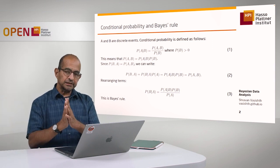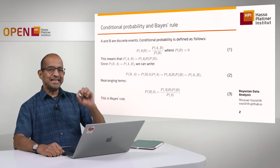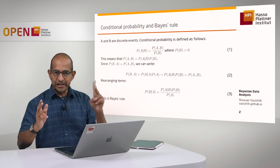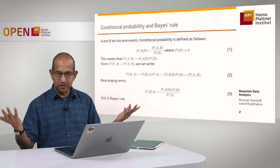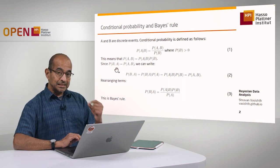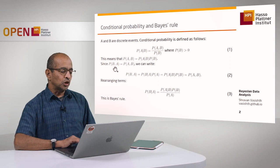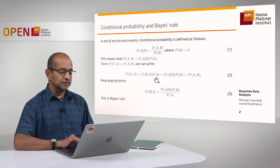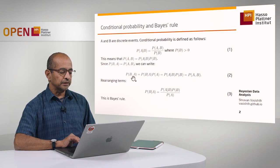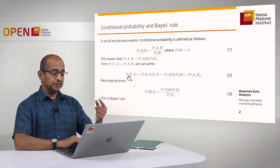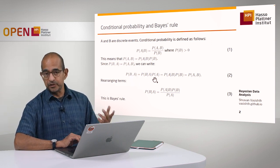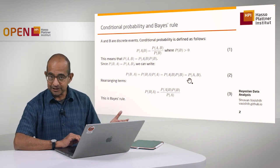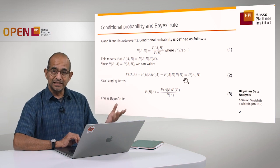Here's another cool thing: the probability of B and A is the same as the probability of A and B. The joint probabilities don't change depending on whether you write A first or B first, because it's coming from the same joint distribution. So if I write the joint probability of B and A, I would expand that by reversing the A's and B's. The joint probability of B and A is going to be the probability of B given A times the probability of A.